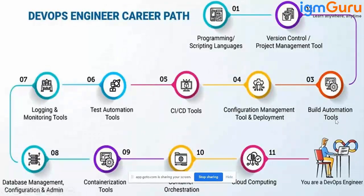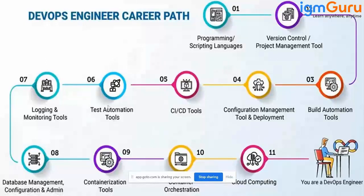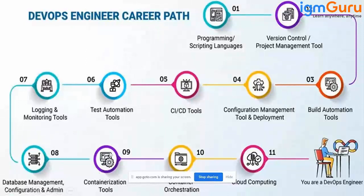You also need a configuration management and deployment tool like Chef, Puppet, or Ansible. Then a CI/CD tool like Jenkins, Travis, or CircleCI. For test automation, JUnit or Selenium. For logging and monitoring, Prometheus and Grafana are the most widely used tools — along with Nagios, Zabbix, and Node Exporter. You need database knowledge like MySQL, and on AWS, RDS. For containerization, learn Docker; for container orchestration, Kubernetes; and for cloud computing, AWS, Azure, or GCP.